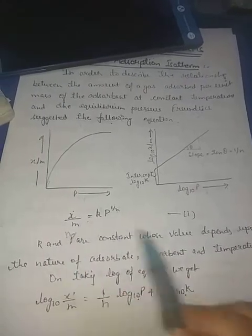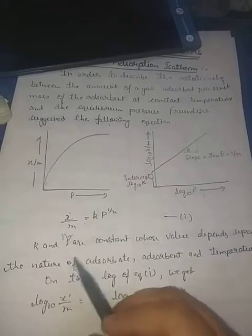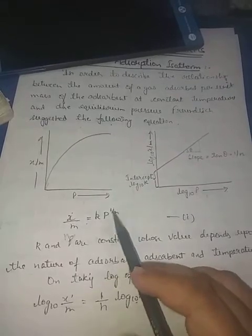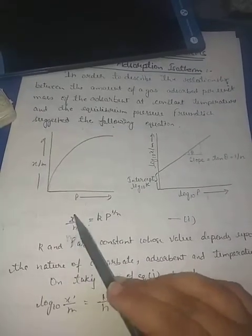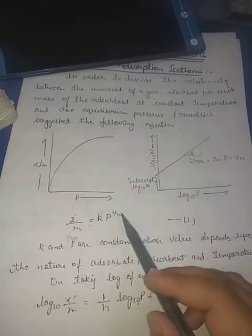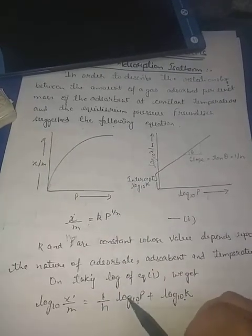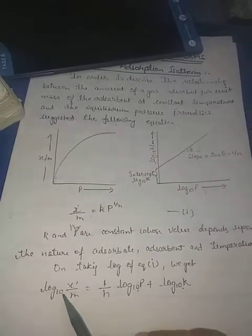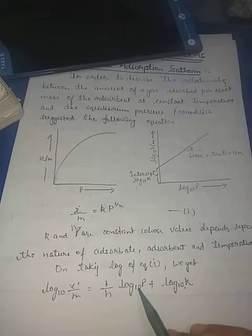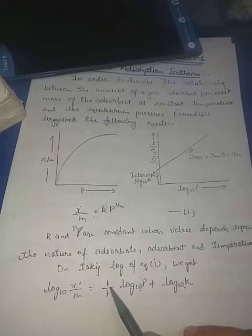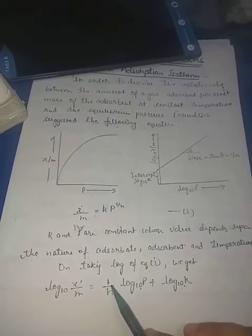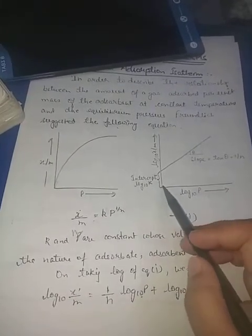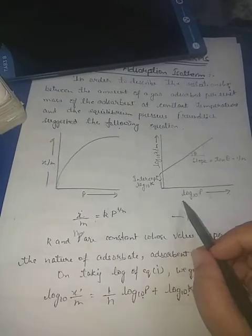If we take the log of equation 1, we get: log(X/M) = (1/N)·log(P) + log(K). When the graph is drawn between log(X/M) and log(P), the slope comes out to be equal to 1/N, and log(K) is the intercept.